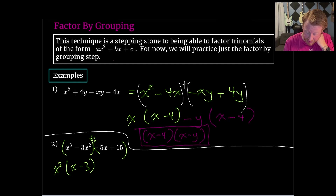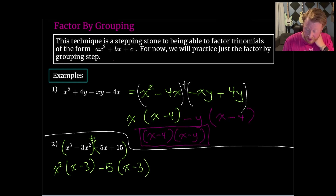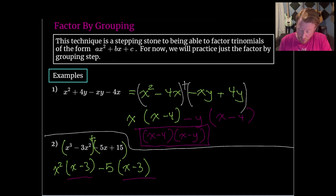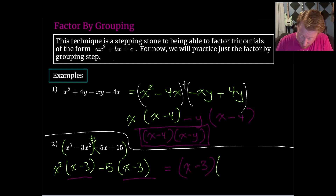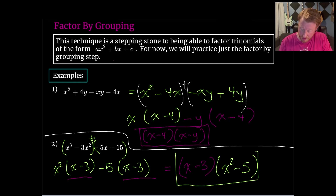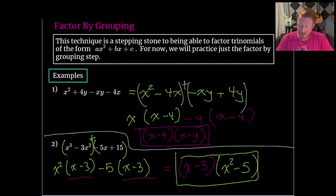Multiplying that back out, we get to where we started. Now I'm trying to find an x minus 3 to match on the second half. So what would I need to factor out in order to get an x minus 3? If I factored out a negative 5, I would be left with x minus 3. Now we have x minus 3 in common, so we can factor that out. We get x minus 3 times x² minus 5, and if we FOIL that out we would get back to where we started. That is the factor by grouping technique.